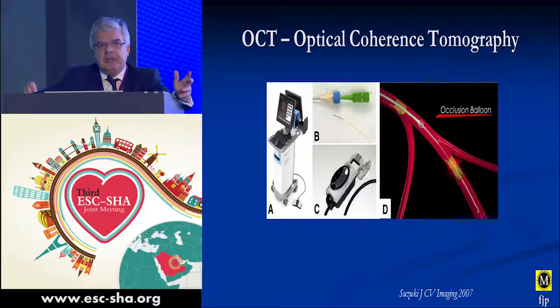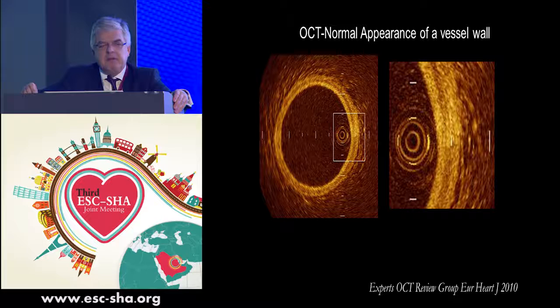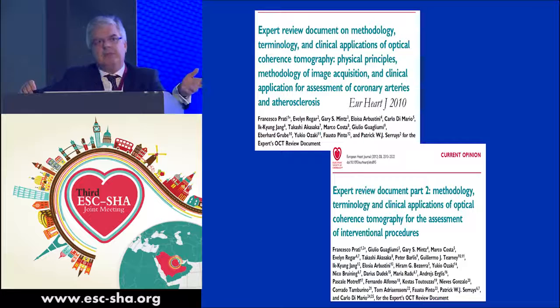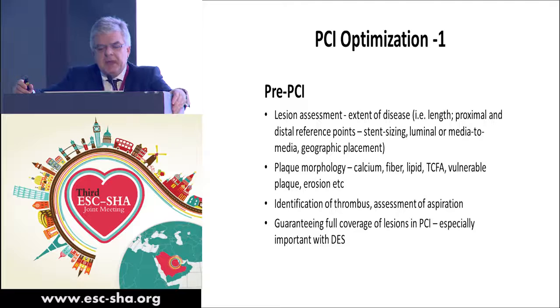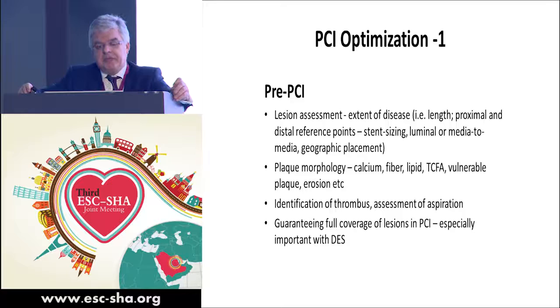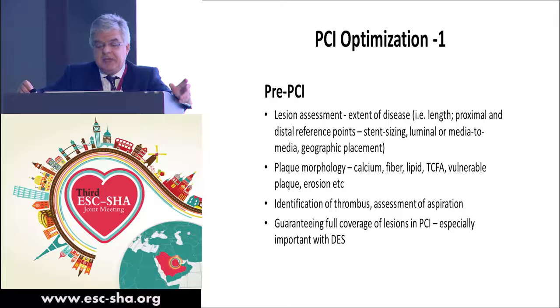This was reviewed in the expert document that I was part of — a couple of papers published a few years ago summarizing the technical aspects and indications for this methodology. To summarize how it can help pre-PCI: it assists in lesion assessment to look at extent of disease, plaque morphology, identification of thrombus and assessment of aspiration in acute coronary syndrome settings, and also to ensure full coverage of lesions in PCI — which may be important for regular stents and also for BVS.